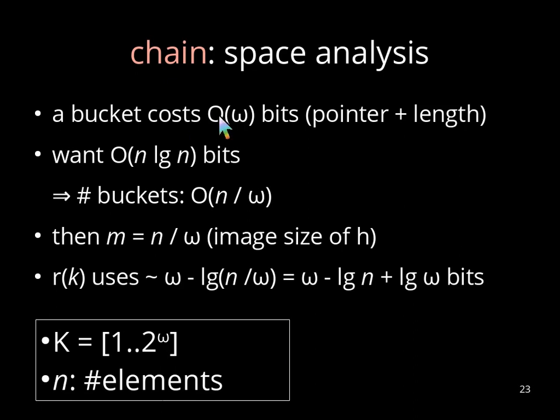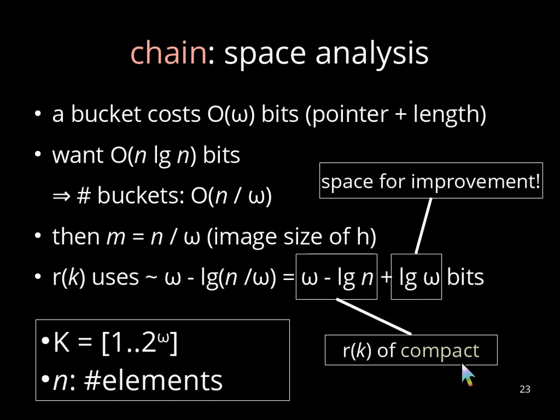If we do the space analysis, we observe that a bucket costs order of omega bits for the pointer and the bucket length. We remind us that omega is the number of bits needed for a key and n is the number of elements. And our target is to store the hash table in order n log n bits. And therefore, the number of buckets should be at most order of n over omega. Therefore, the image size of our hash function m is n divided by omega. And consequently, the remainder uses roughly omega minus log n divided by omega bits, which is omega minus log n plus log omega. And the first two terms are the number of bits required by compact. So the last term is kind of a penalty. And in the following, I want to show you an approach where we can get rid of that.